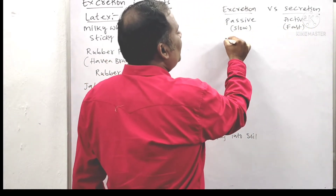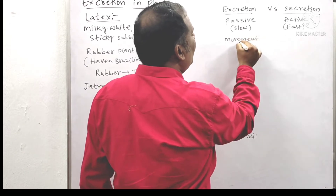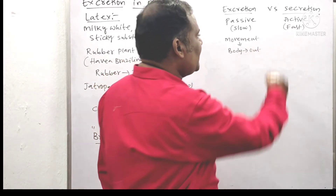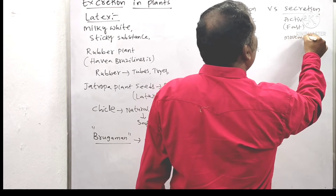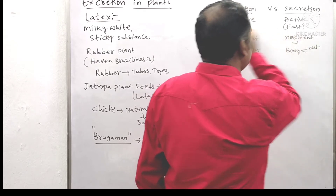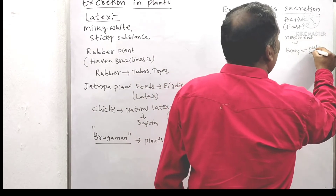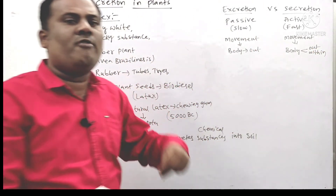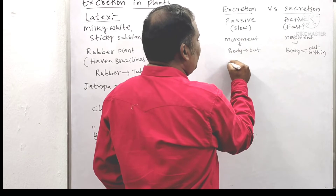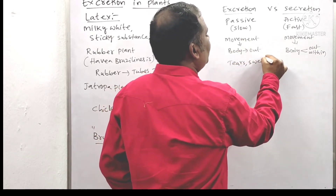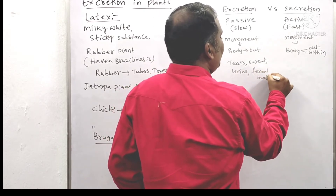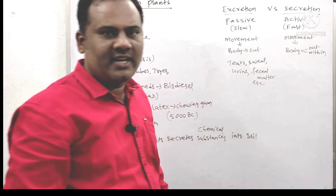In excretion, the movement of molecules occurs from the body to outside. Whereas in secretion, the movement of molecules can occur from the body to outside — just as Brugman described — or else within the body as well, moving from one place to another place. Examples of excretory products are tears, sweat, urine, fecal matter, and so on.